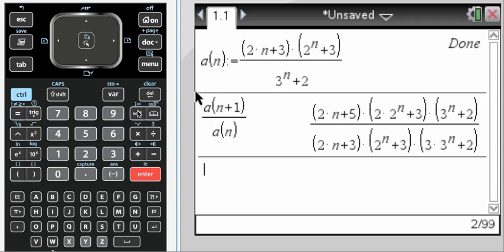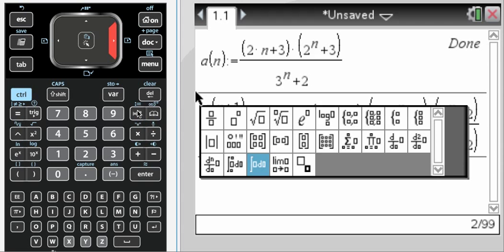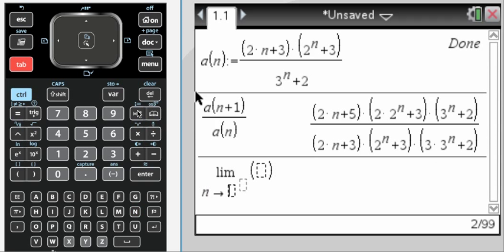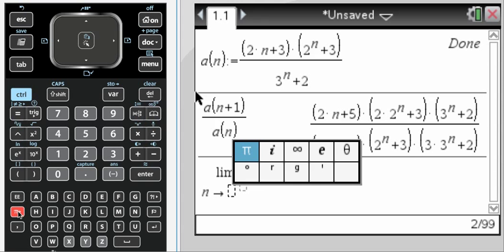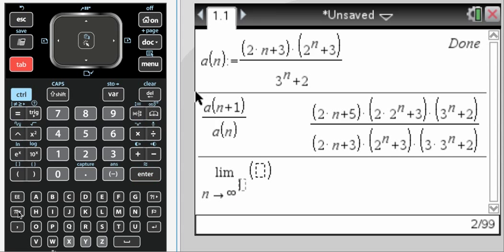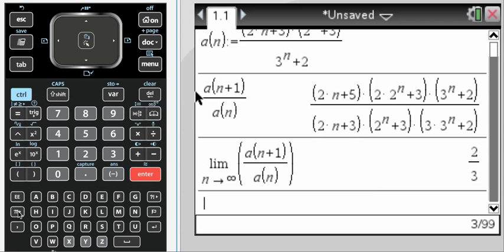But what's nice about the CAS here is that we can do the limit as n goes to infinity, which is in the pi key here, of that ratio. So I do that, and I get 2 thirds, and I know that that is less than 1, so I know that this series actually will converge by the ratio test. And it's a pretty useful kind of tip or thing that we can do.